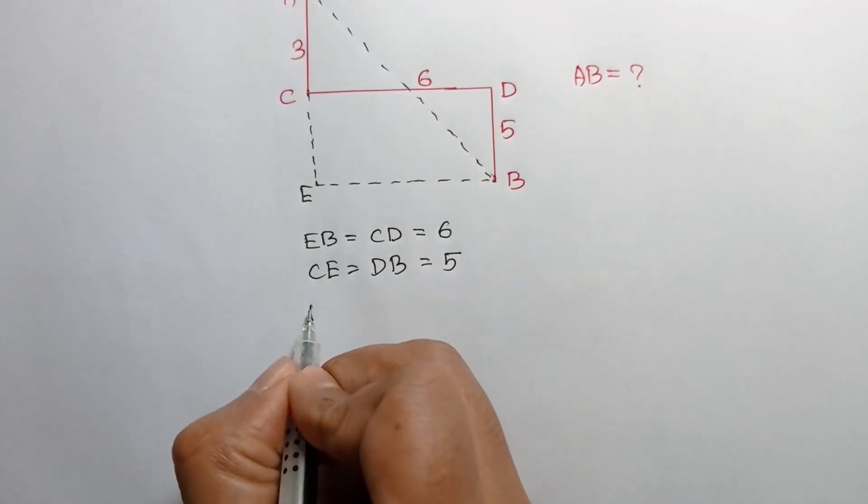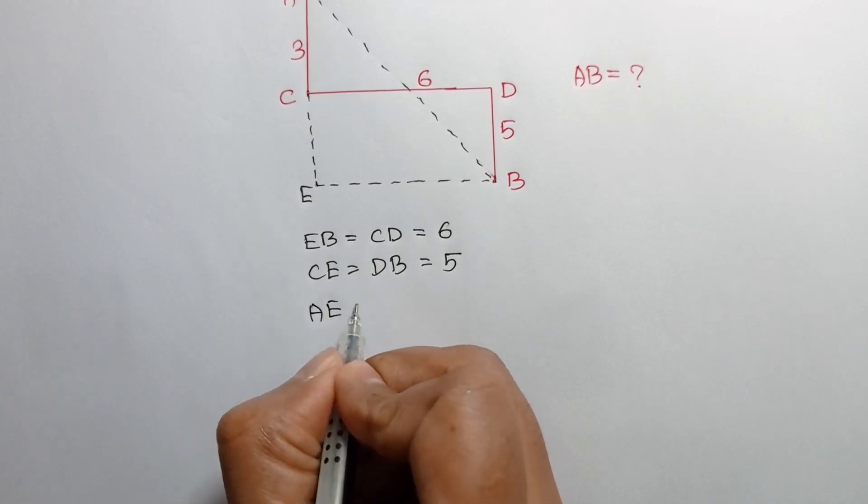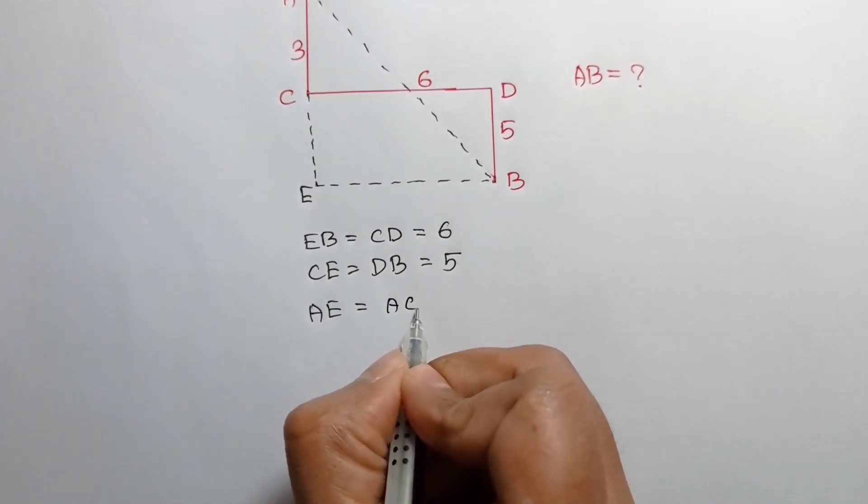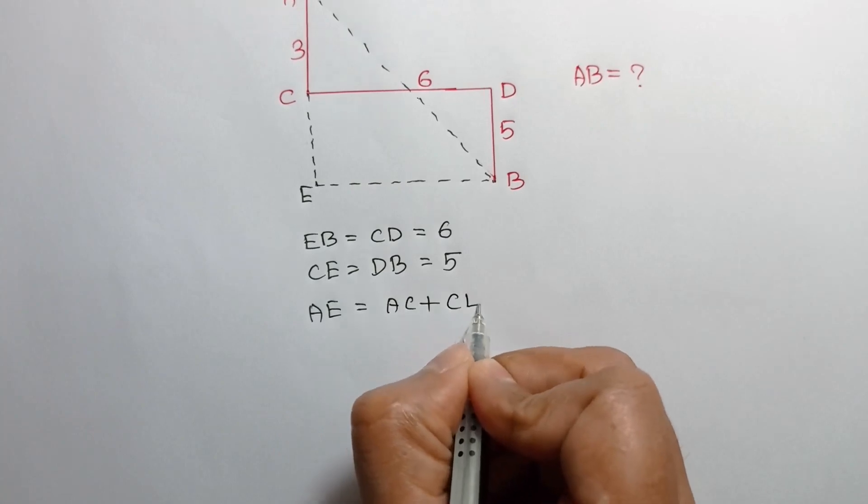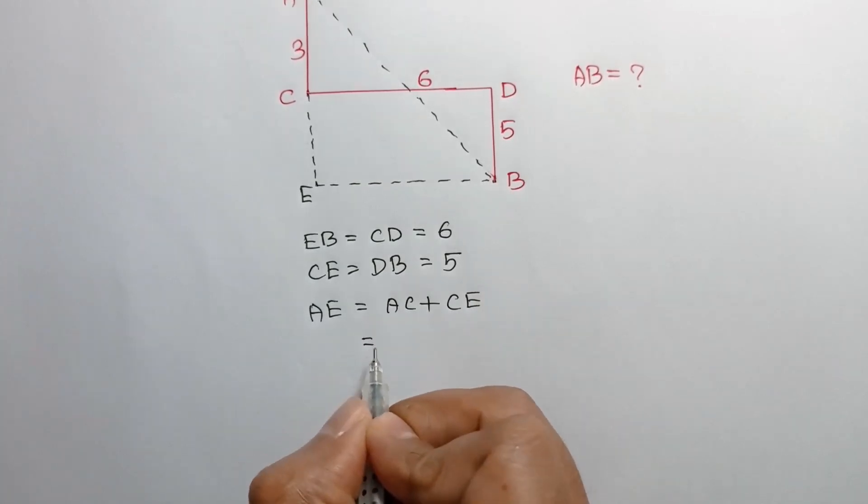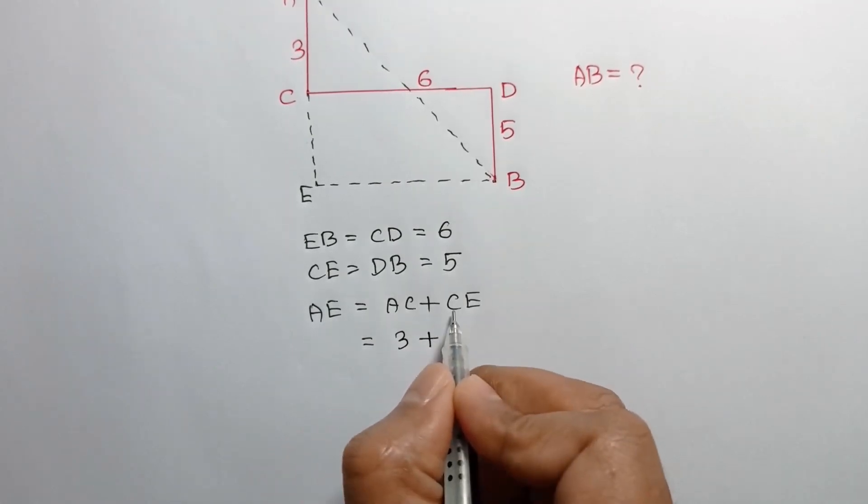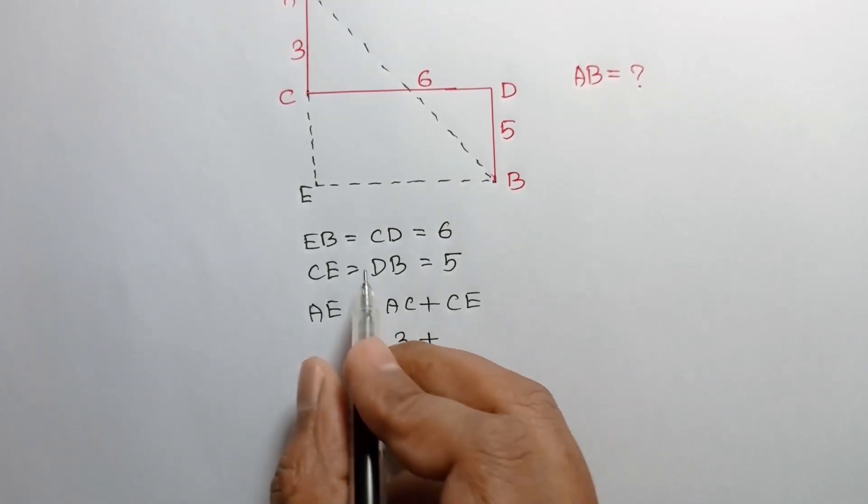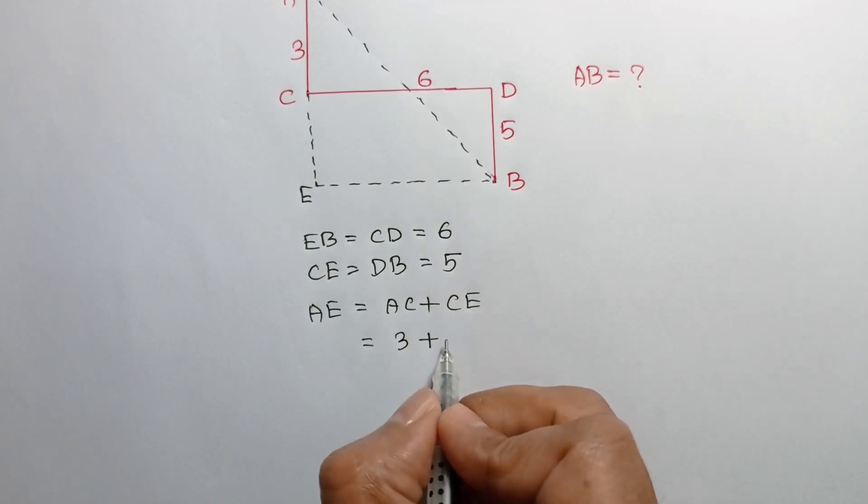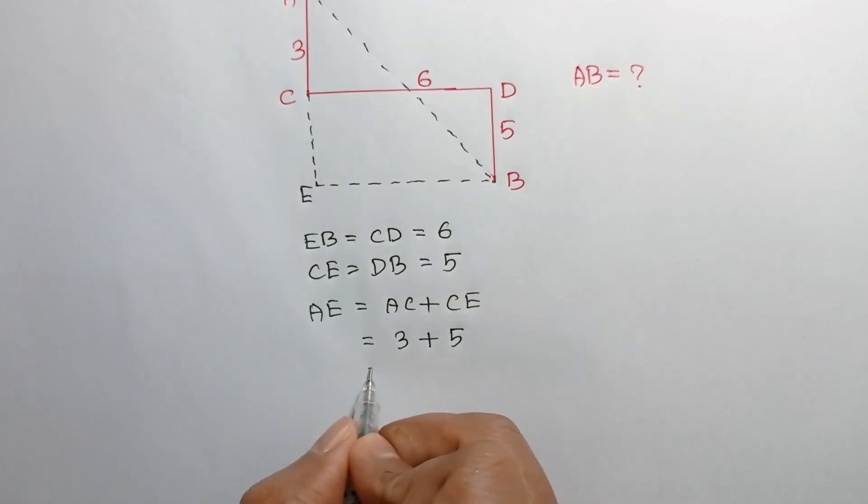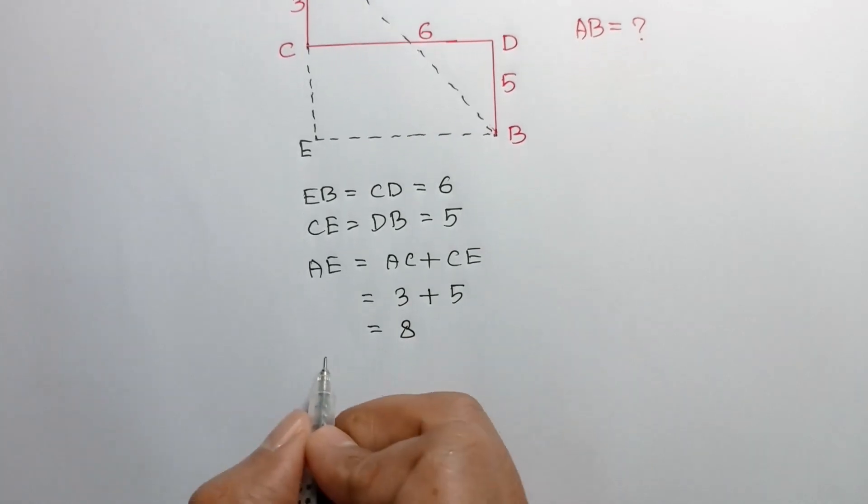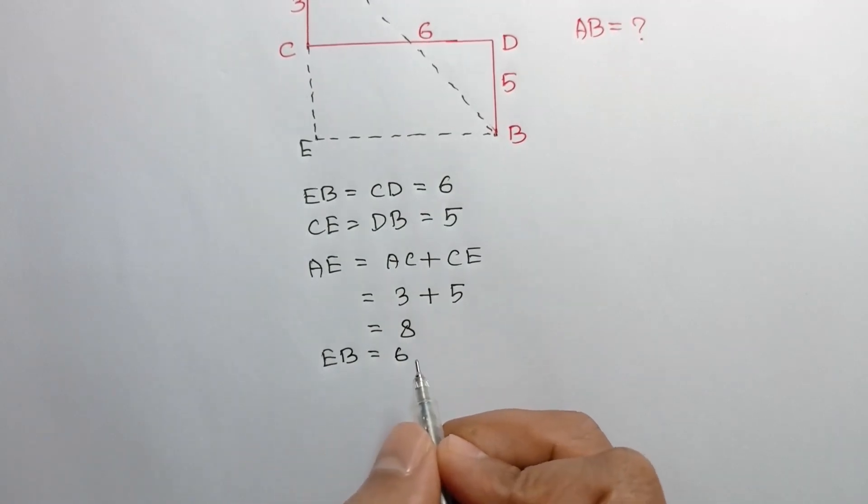AE is equal to AC plus CE. The value of AC is equal to 3 and CE is equal to 5. So AE is equal to 8 unit and EB is equal to 6 unit.